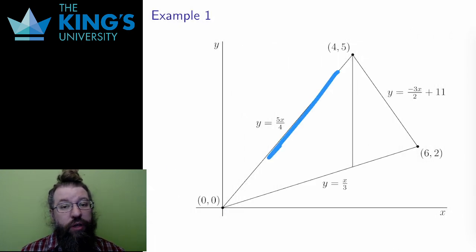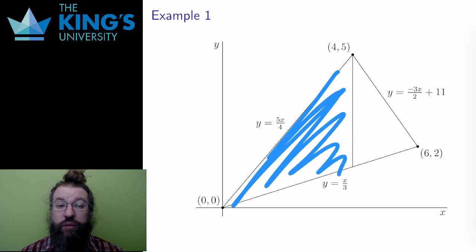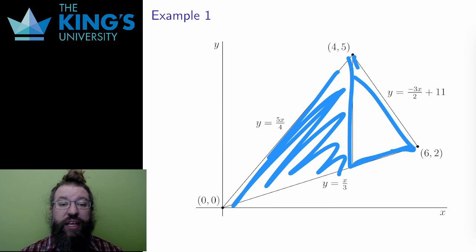That is a measure of the volume over the left part of the triangle. Now I want the volume over the right part. The lower bound is still x/3, but the upper bound is -3x/2 + 11.